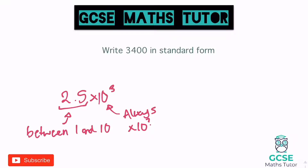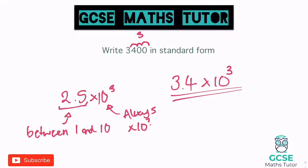So 3,400 — if I hop the decimal in from the right, I go 1, 2, 3, and that makes 3.4. So 3.4 is between 1 and 10 — I couldn't have 34, and I couldn't have hopped it again to get 0.34 because that wouldn't be between 1 and 10. So it's 3.4 times 10 to the power of 3, counting those 3 jumps. That's our final answer in standard form.